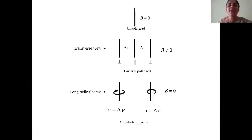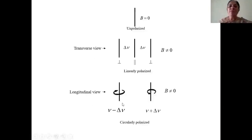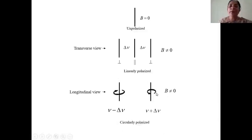After observing the transverse view, he took the telescope and viewed along the longitudinal direction, parallel to the magnetic field. He observed a change: in the longitudinal view, the middle line was missing. He could see only the outer two lines, and when he analyzed them, both lines were circularly polarized — one in the anti-clockwise direction and the other in the clockwise direction.